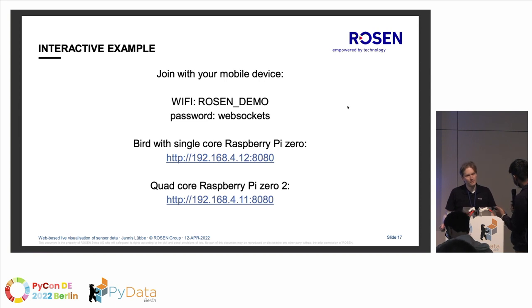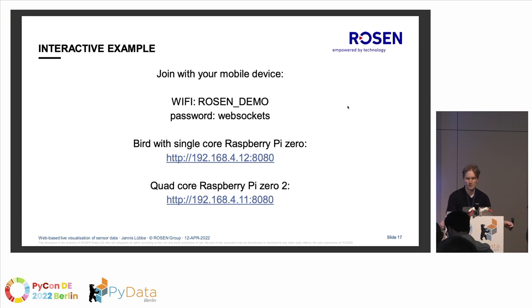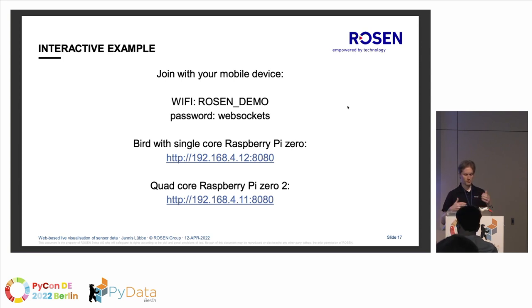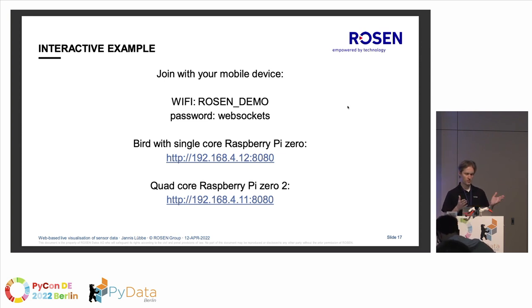Question: Why did you choose Redis over RabbitMQ or ZeroMQ? Mainly because I started with Redis, and in our lab setup it's also used as a database — storing configuration data, the to-do list, and so on. I'm just using what I already know. For unidirectional communication, ZeroMQ could also be a solution, but Redis has shown to be really fast.